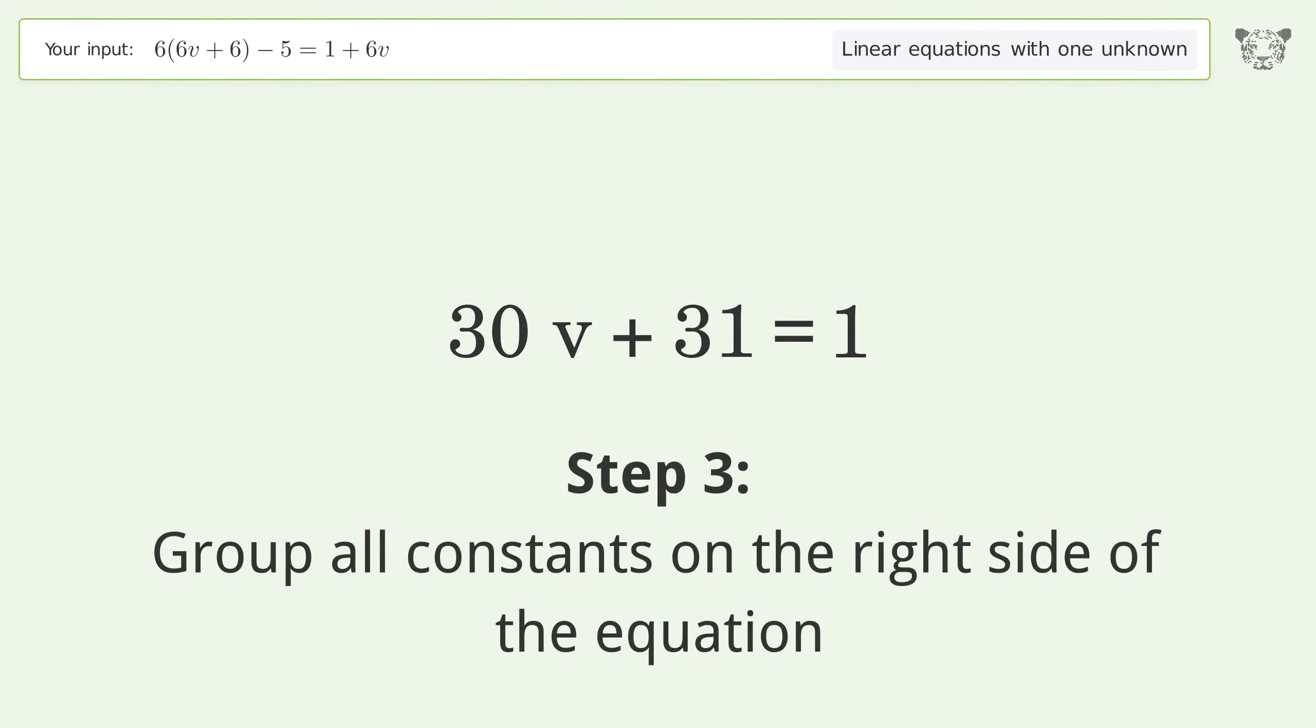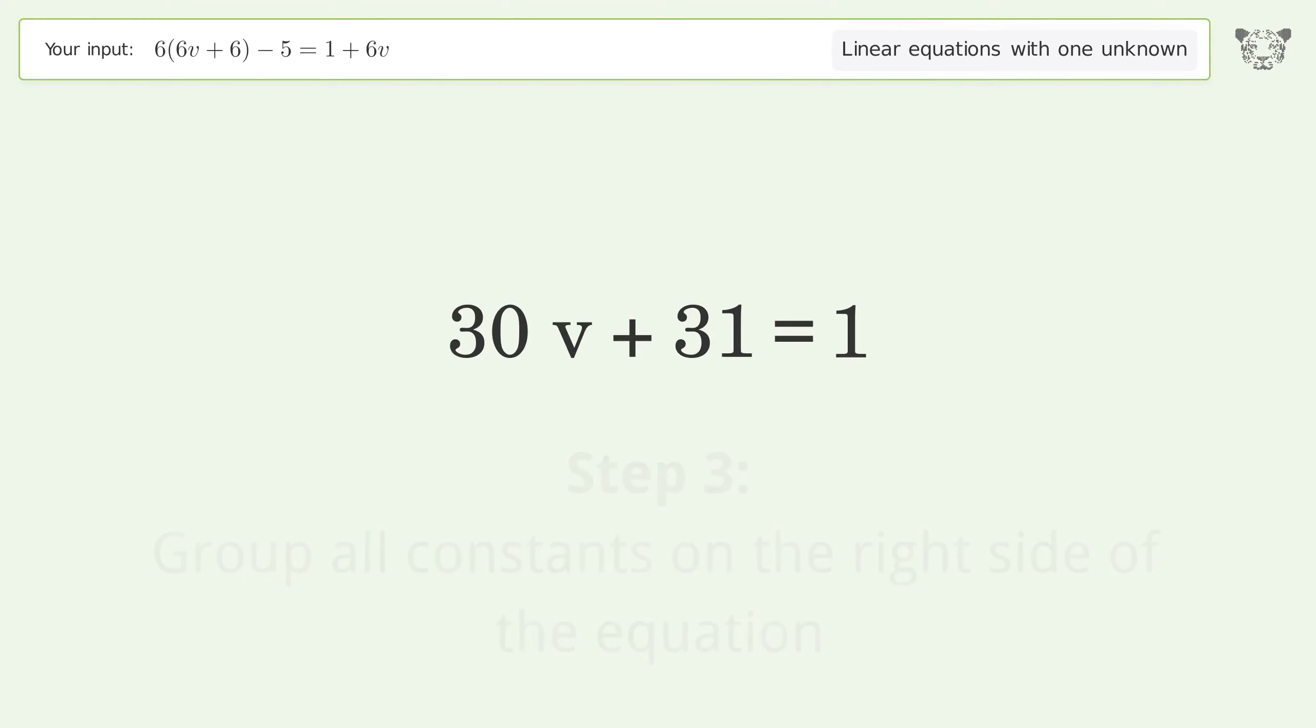Group all constants on the right side of the equation. Subtract 31 from both sides. Simplify the arithmetic.